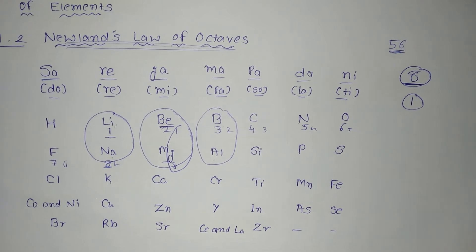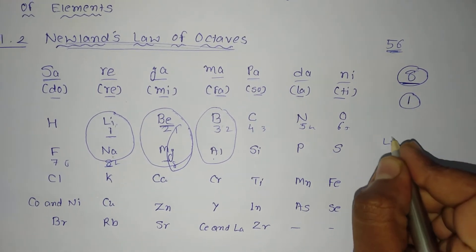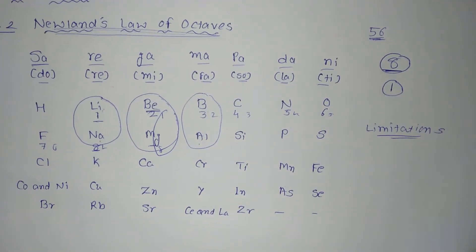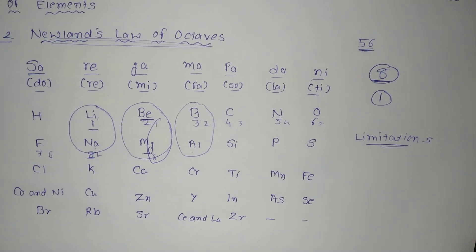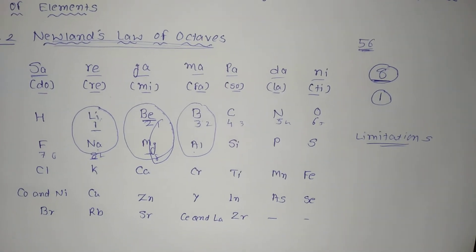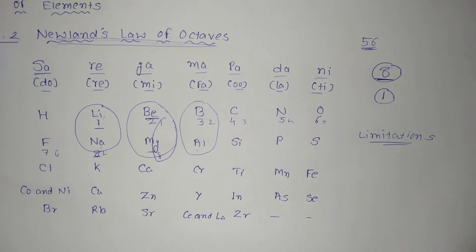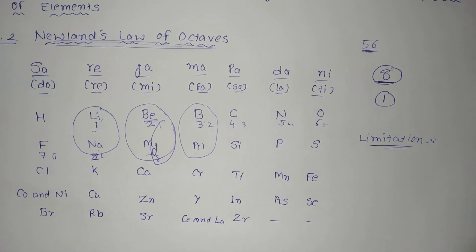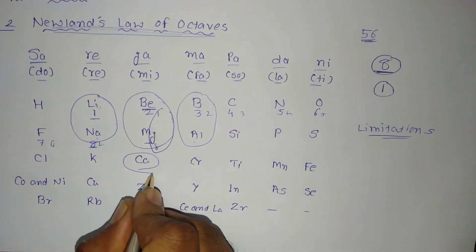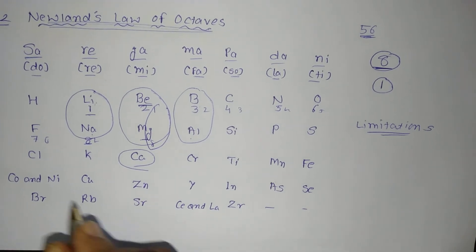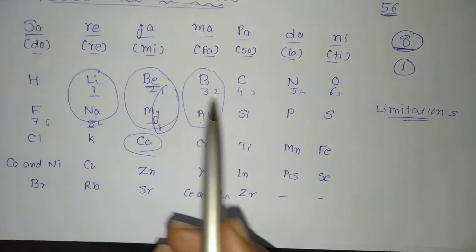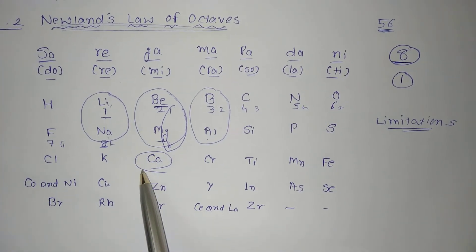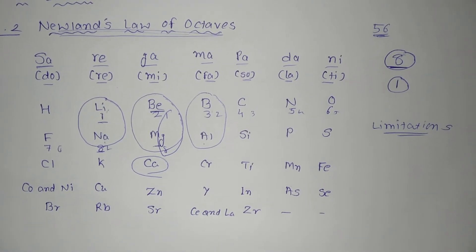However, his classification also had certain limitations. The first limitation: it was found that the Law of Octave was applicable only up to calcium. After calcium, every 8th element did not possess properties similar to that of the first one. So, this was his first limitation.